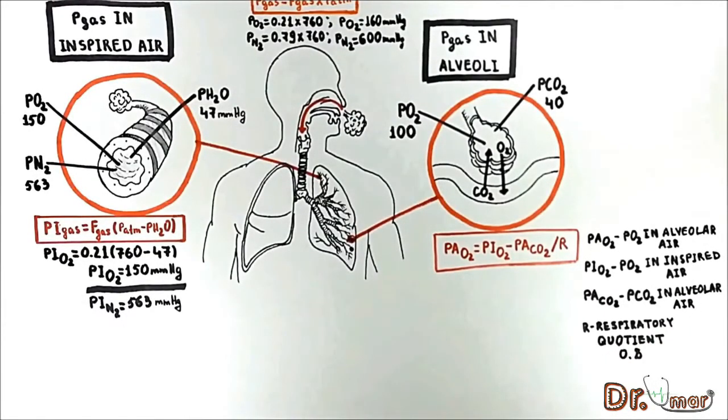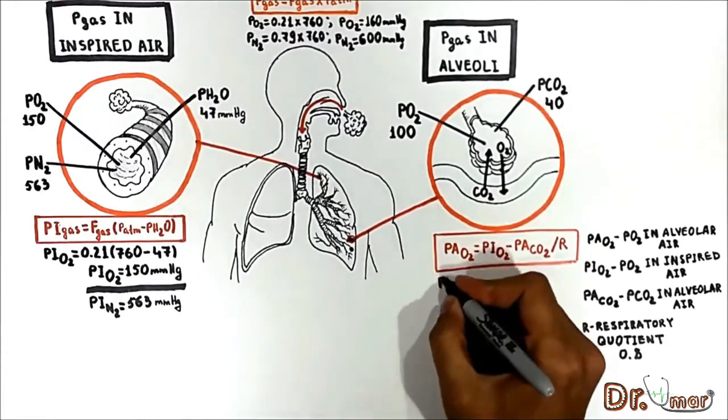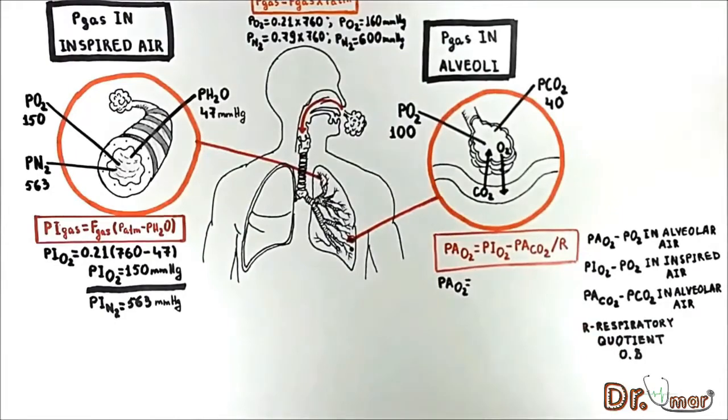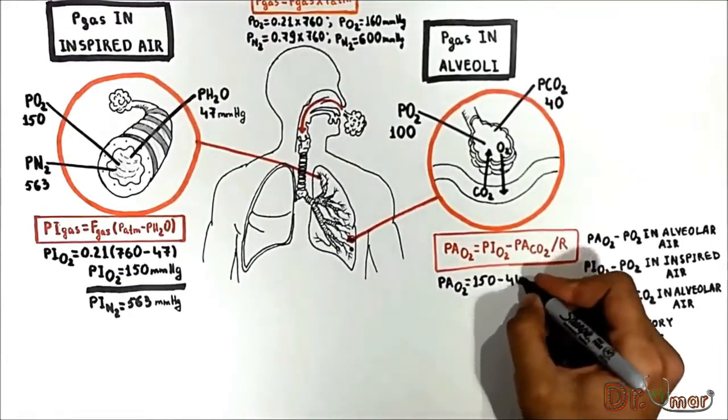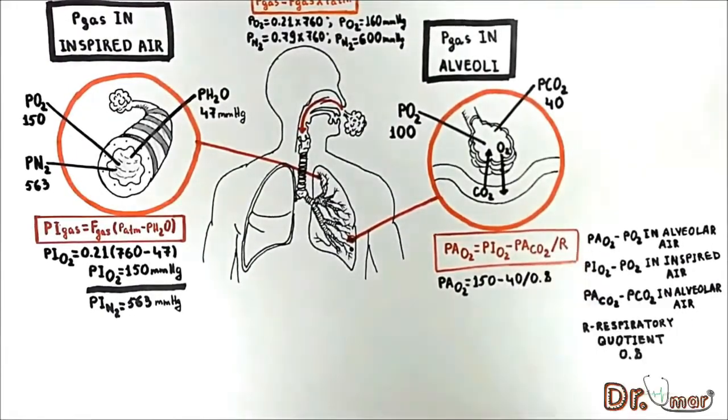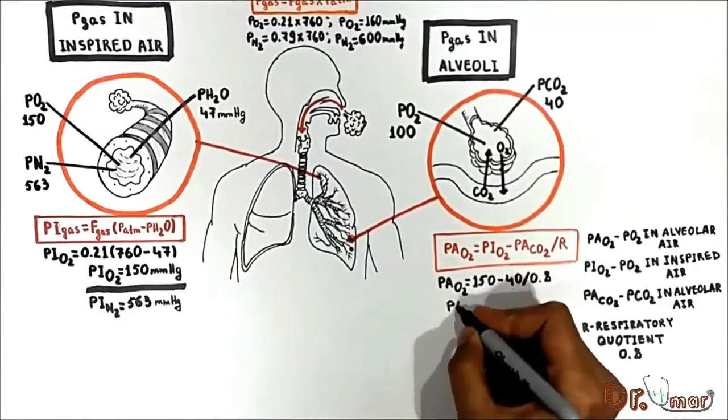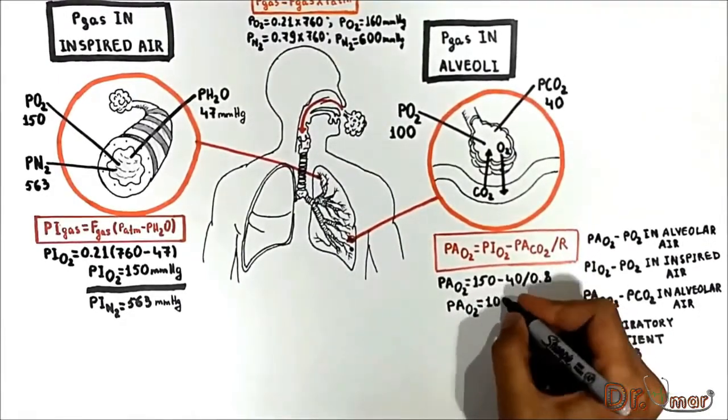Let us determine the alveolar PO2 using our equation. PaO2 equals 150 mmHg minus 40 mmHg divided by 0.8, and this gives us 100 mmHg.